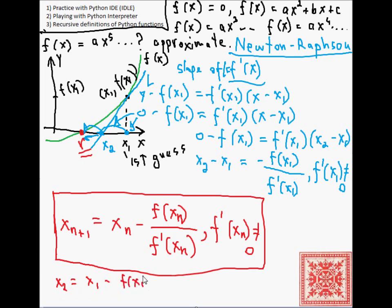So, the second guess is obtained from the first, like this. So, x1 minus f of x1, the derivative of f of x1. And then the third is obtained from the second, x2 minus f of x2, the derivative of f of x2. And so forth. I will continue.